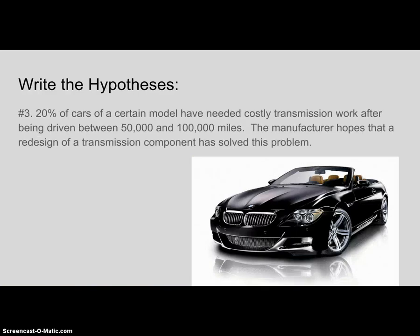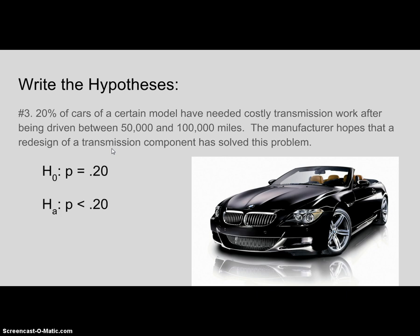What about this one: 20% of cars of a certain model have needed costly transmission work between 50,000 and 100,000 miles. The manufacturer hopes a redesign of the transmission component has solved this problem. If the problem is solved, then less than 20% of cars would need the work, so P less than 0.20 would be the alternative hypothesis, with P equals 0.20 as the null.